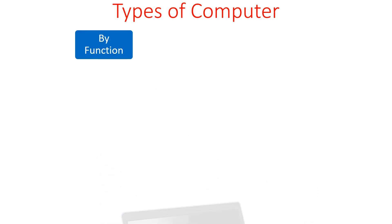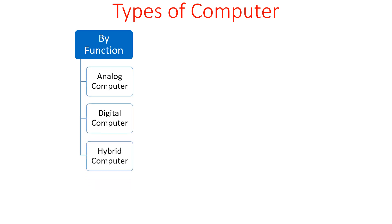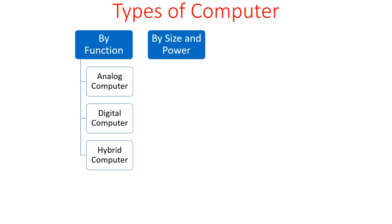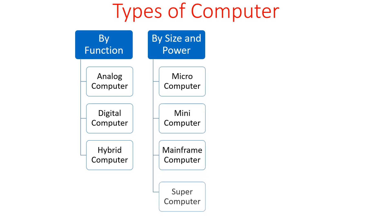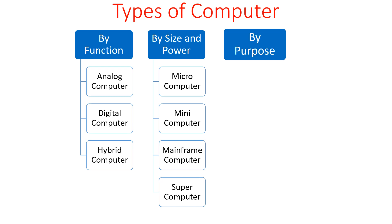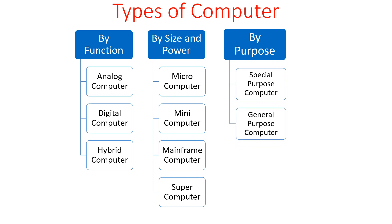By the function there are three types of computer: analog computer, digital computer, and hybrid computer. Similarly, on the basis of size and power or capacity there are four types: micro computer, mini computer, mainframe computer, and super computer. On the basis of purpose there are two types: special purpose computer and general purpose computer. In this video we will see all these types of computer in detail.